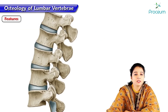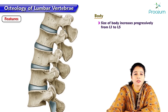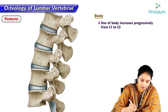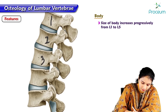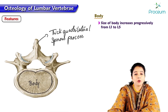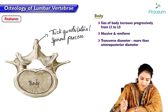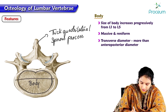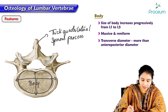Regarding the features of the body of lumbar vertebrae: the size of the body progressively increases from the 1st to the 5th lumbar vertebra. The body is massive and reniform, that is kidney-shaped, and its transverse diameter is more than the anteroposterior diameter.